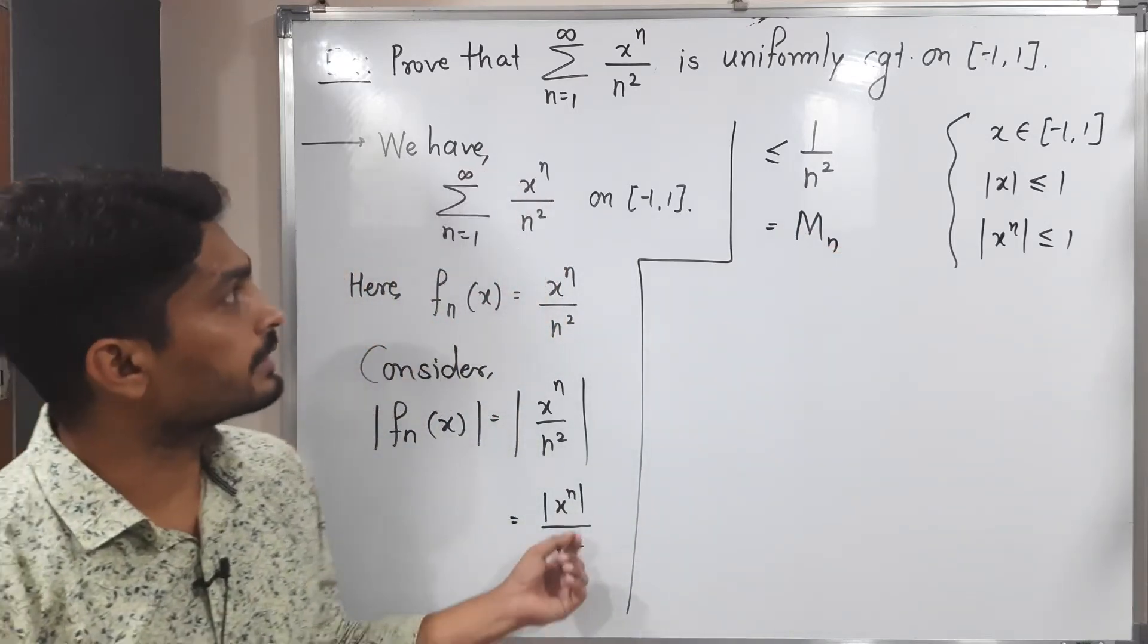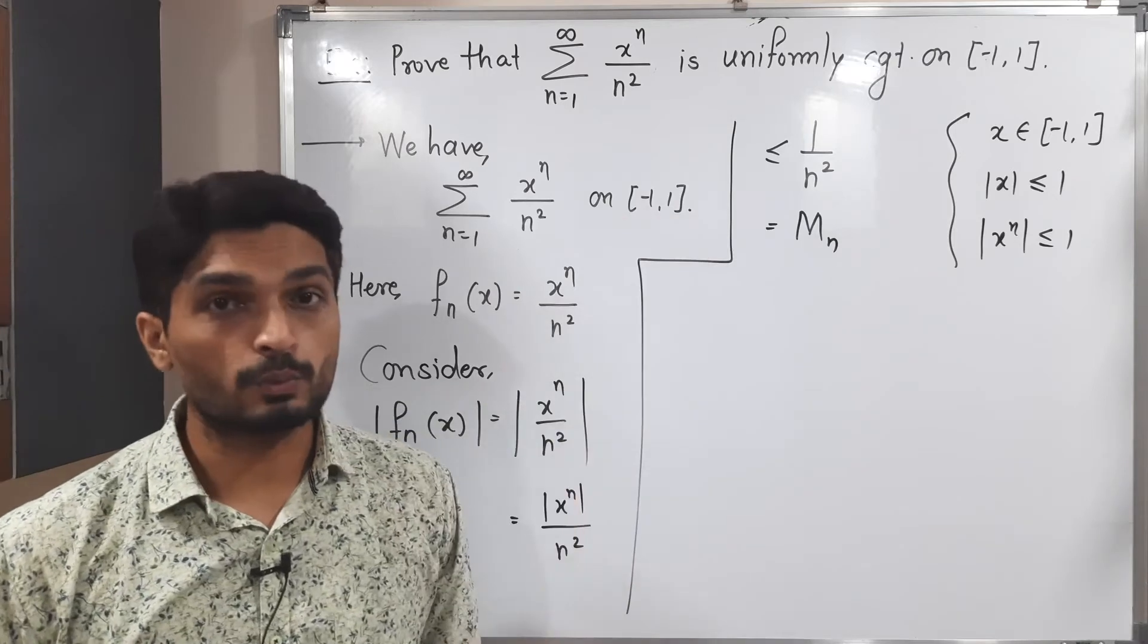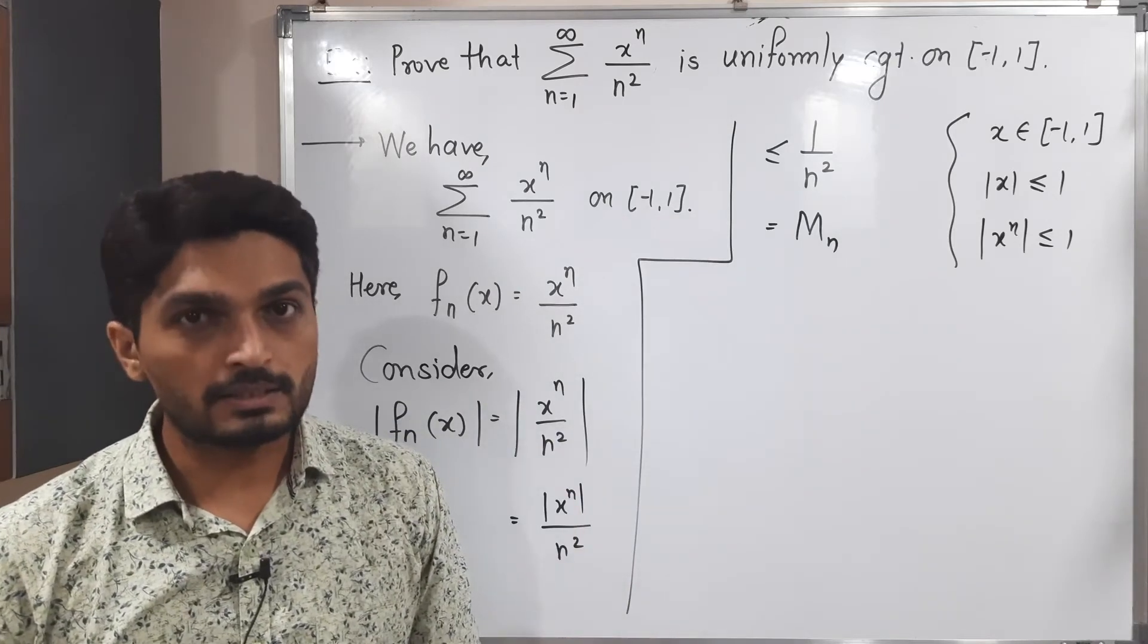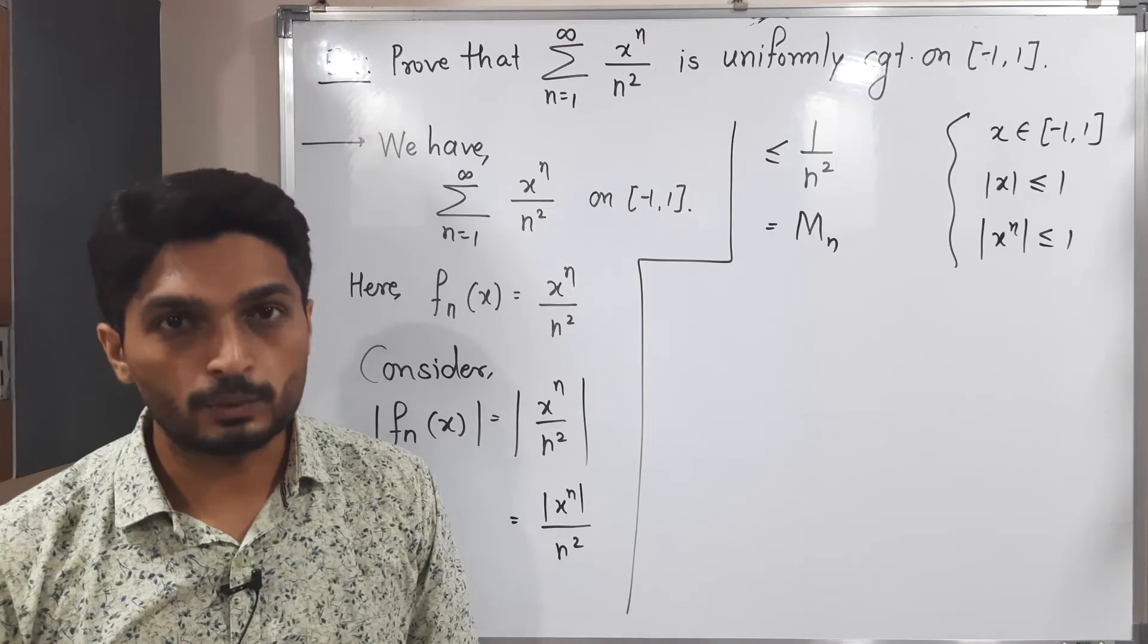In this way we got this is less than or equal to one upon n square, we are calling it as mn, since Weierstrass M-test requires such mn.